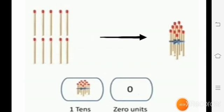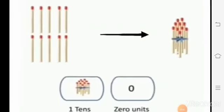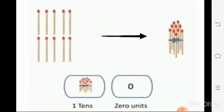When units bundle together, we keep them on the left side, and we call this one tenth. The right side units will be empty, so we write zero.